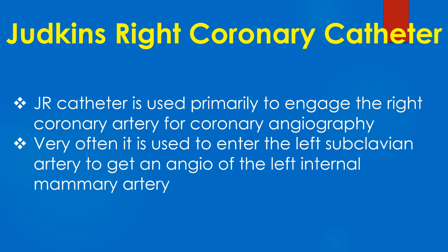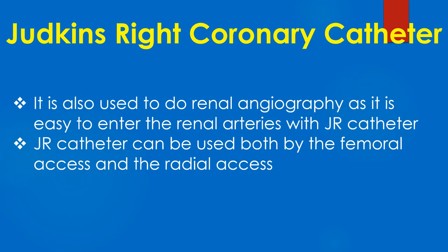The JR catheter is used primarily to engage the right coronary artery for coronary angiography. Very often it is used to enter the left subclavian artery to get an angiogram of the left internal mammary artery. It is also used to do renal angiography, as it is easy to enter the renal arteries with JR. The JR catheter can be used both by the femoral axis and the radial axis.